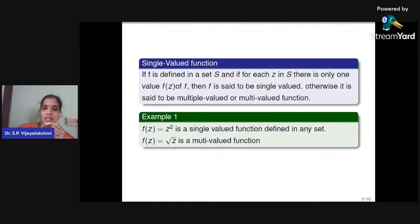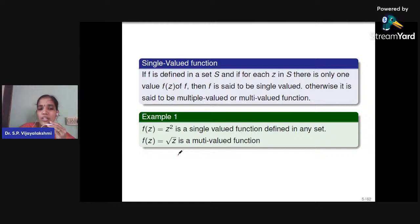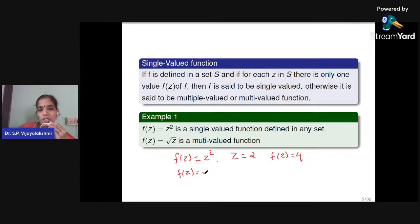A single-valued function has exactly one value for each input. For example, f(z) = z² gives f(2) = 4, a single value. Whereas f(z) = √z at z = 4 gives ±2, two values — making it a multi-valued function.